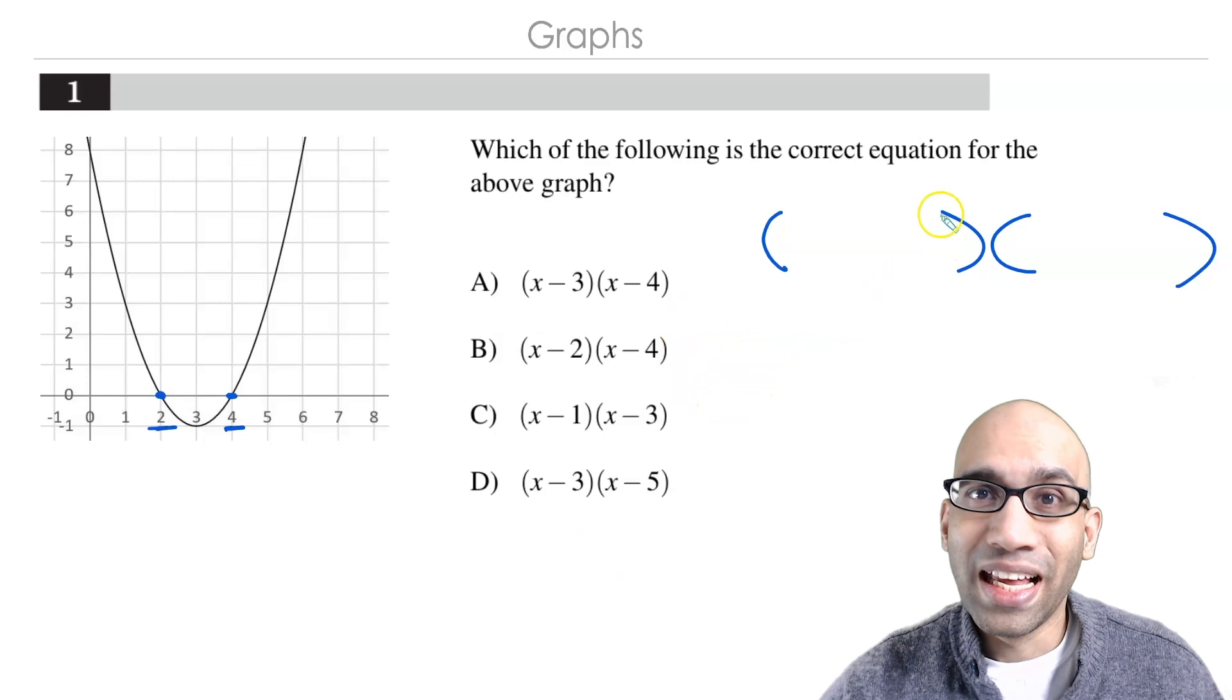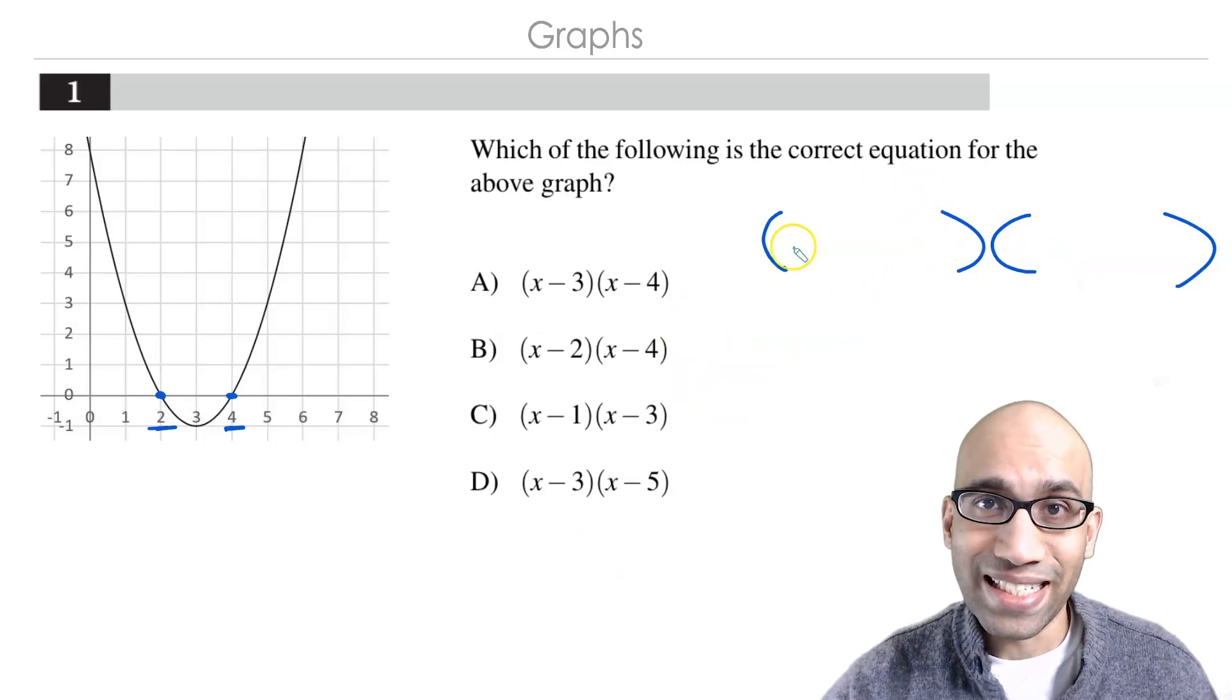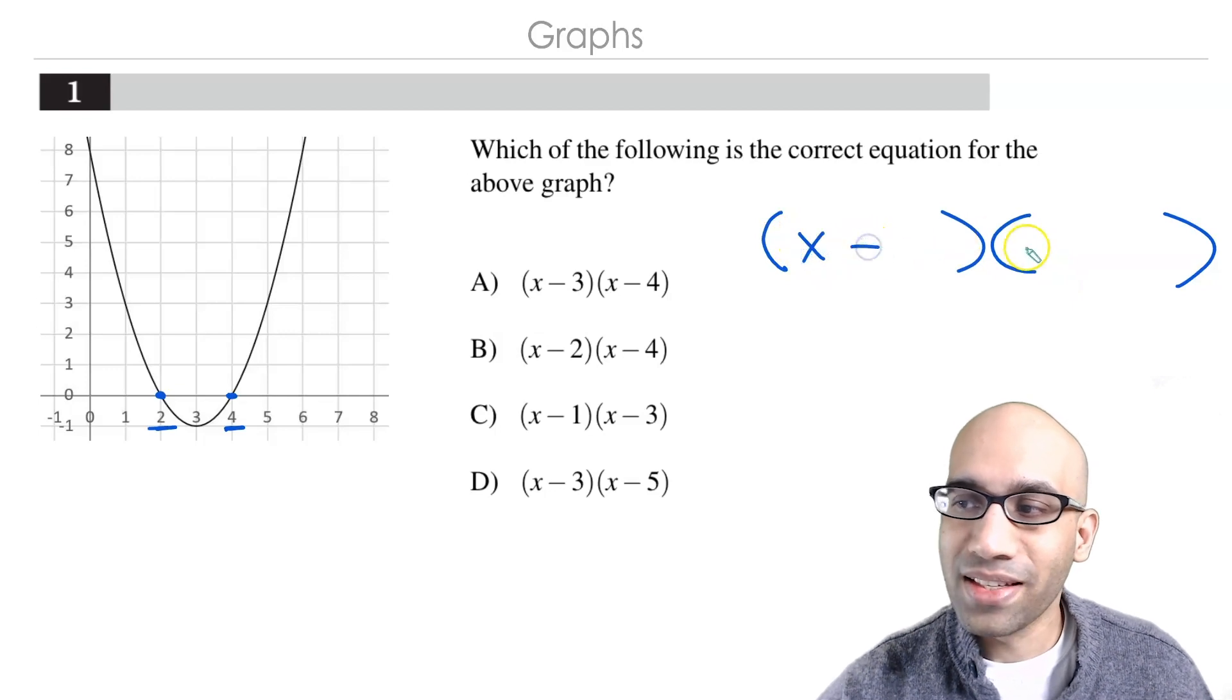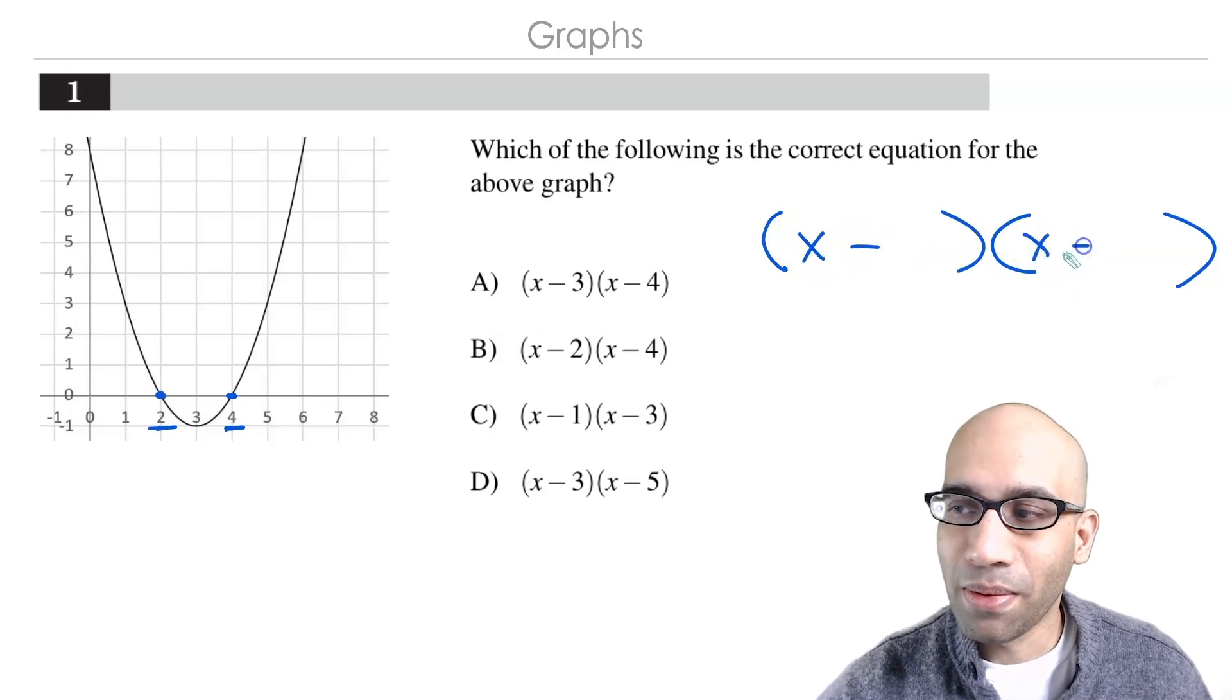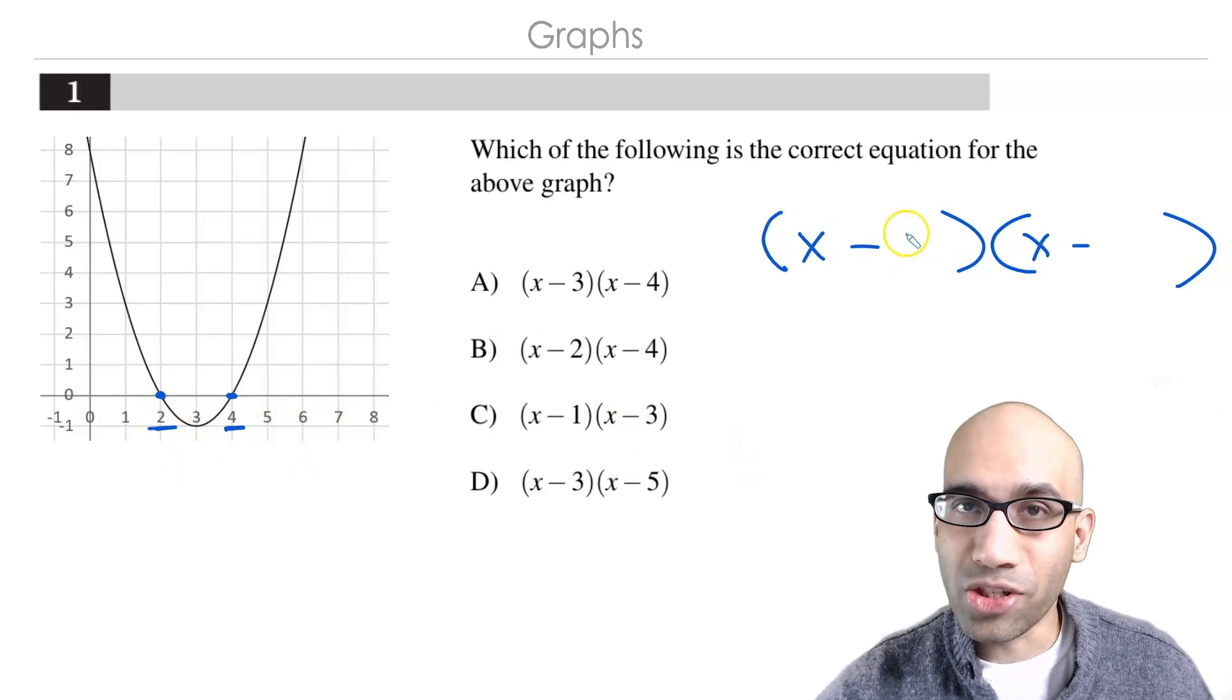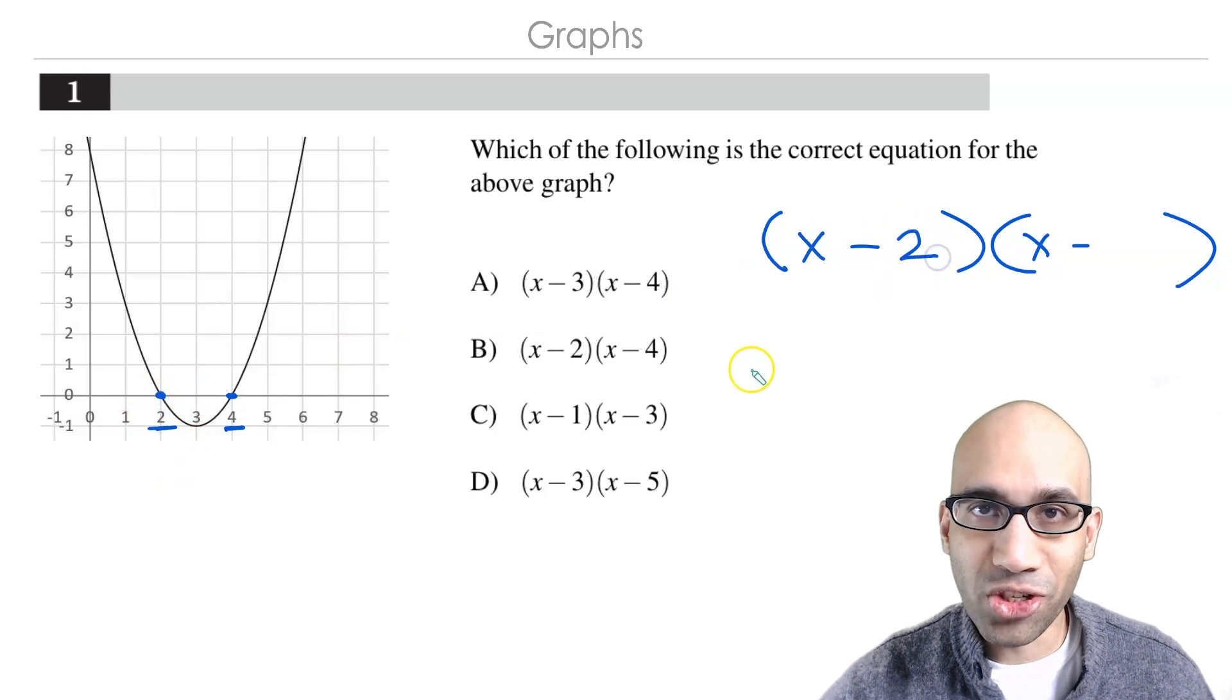Now, all you've got to do is write these pair of parentheses and write down x minus and x minus. On the right-hand side, you take this 2 and just copy it over here. So you've got x minus 2.